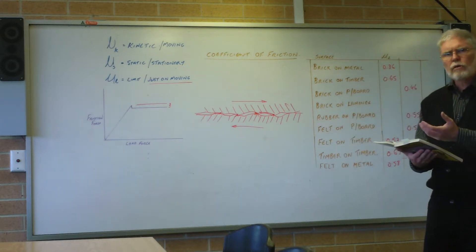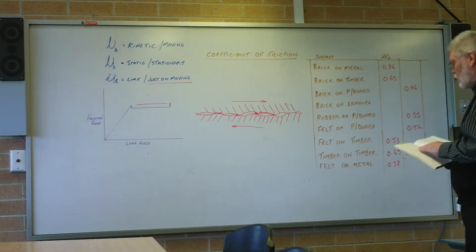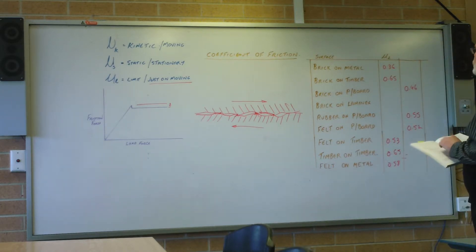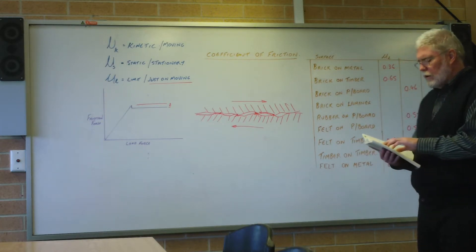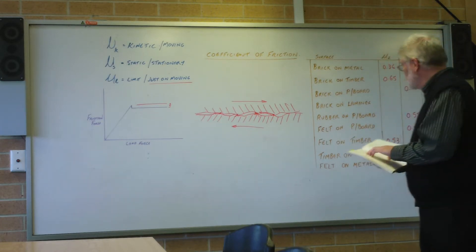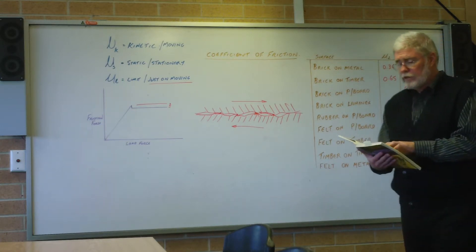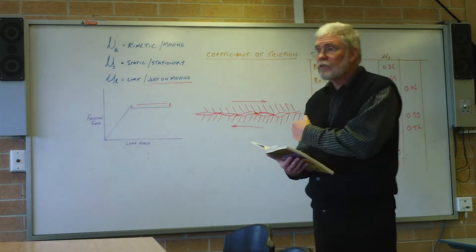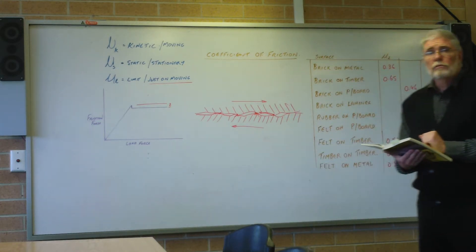Wood on metal, between 0.4 and 0.6 - did we get a wood on metal? We didn't. Cloth on metal, felt on metal - between 0.3 and 0.6, so that's within the range. You guys are coming up with the figures that are in the tables for these materials.